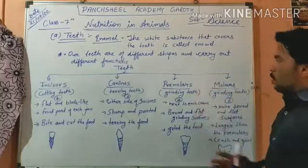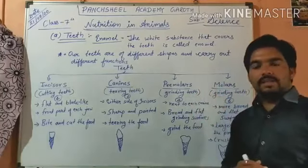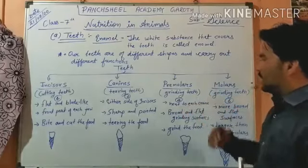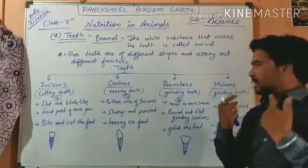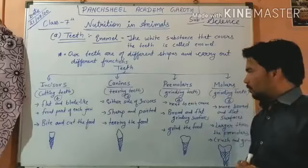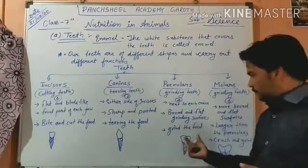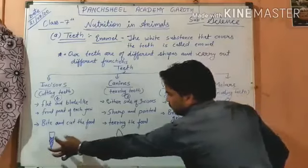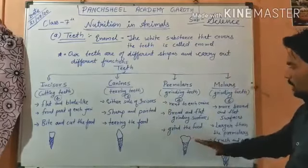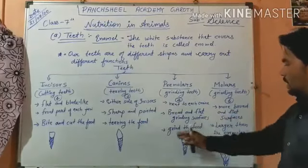Premolars are grinding teeth. There are four in every jaw — two next to each canine. They have a broad and flat grinding surface. Unlike the blade-like incisors or pointed canines, premolars are broad and flat, so they can grind food into small pieces for easier digestion.